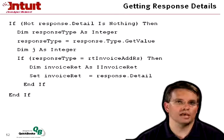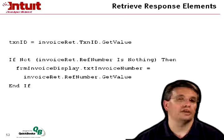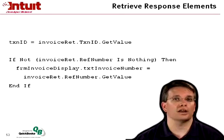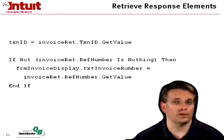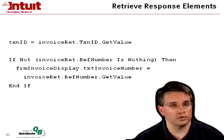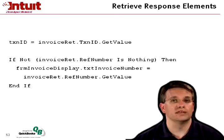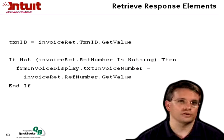Once I have the response itself, I'm ready to get elements from it. If I need the transaction ID from an invoice add request, then I grab the transaction ID element and get its value. If I want the ref number, I need to make sure that it's not nothing, because there doesn't have to be a ref number in an invoice. And I get that invoice number from the invoice. Very straightforward.